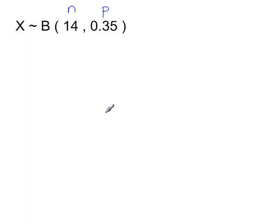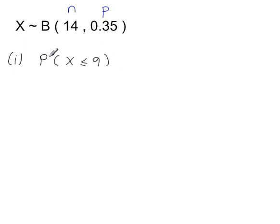To calculate probabilities, let's say we're looking for the probability that X is less than or equal to 9. So you have, at most, 9 successes.